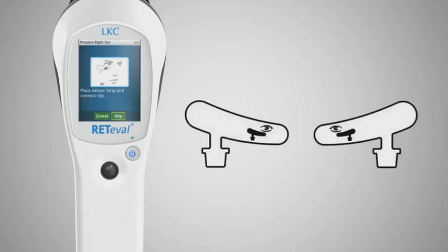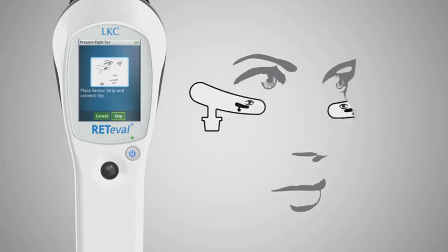The self-adhering sensor strips are designed for proper location and orientation. Place one below each eye.